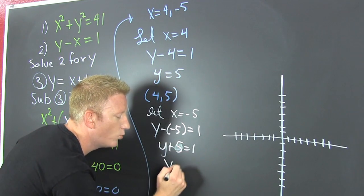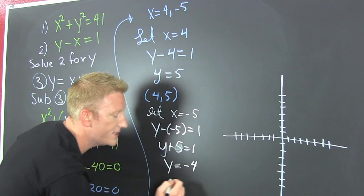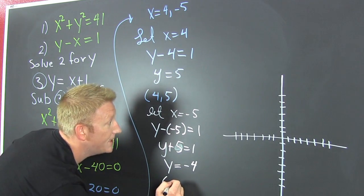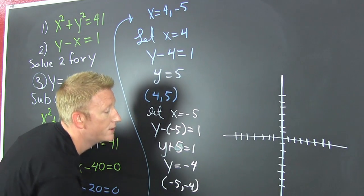And then y is equal to, wait for it, a minus 4. So my point is a minus 5, minus 4.